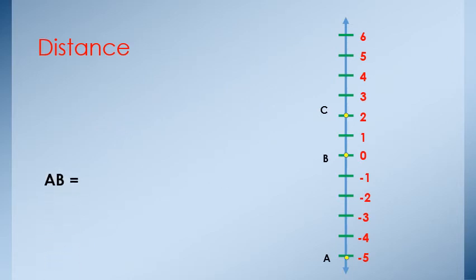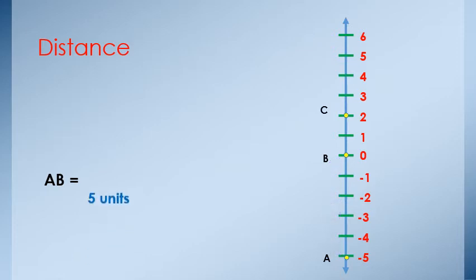Distance AB: count from A to B — 1, 2, 3, 4, 5 units. AB equals 5 units. And if we use the rule, absolute value of the difference: absolute of 0 minus negative 5 equals 5 units.